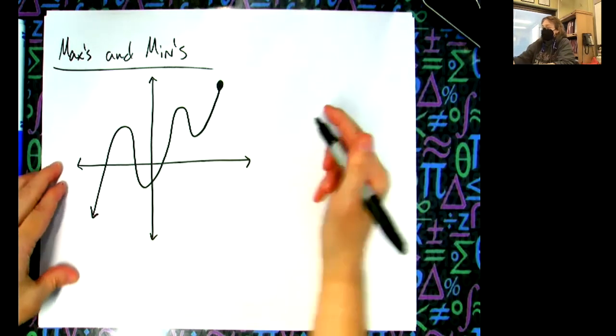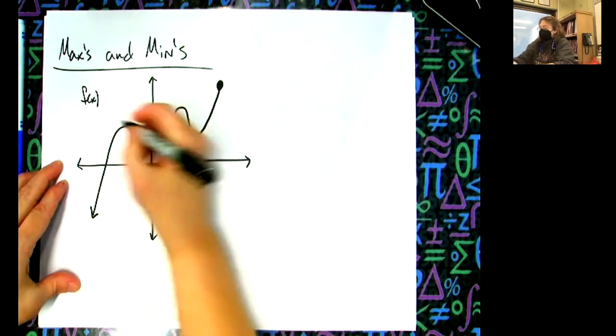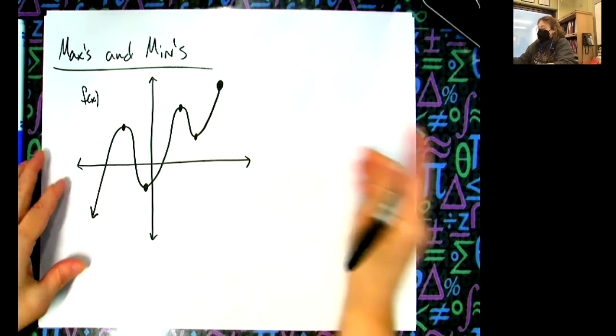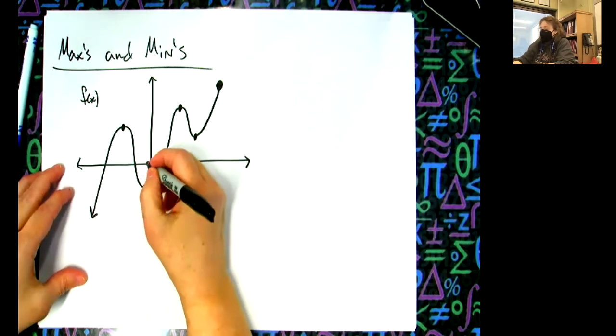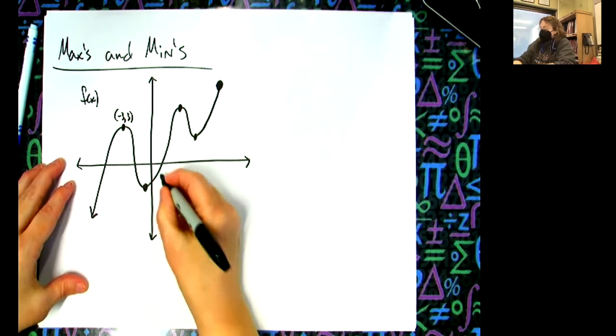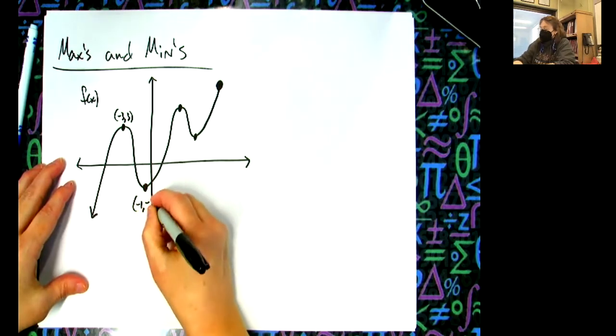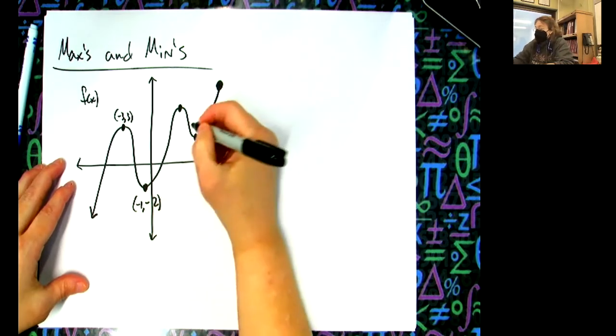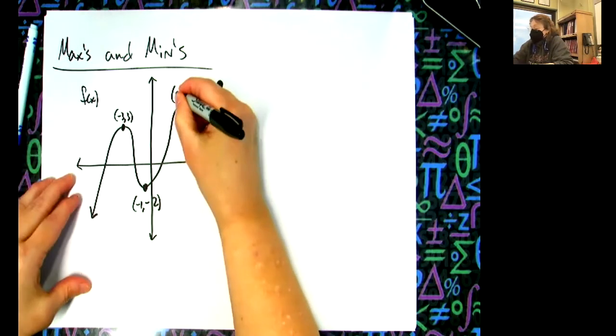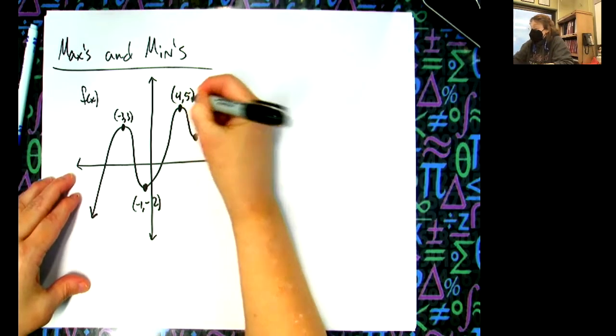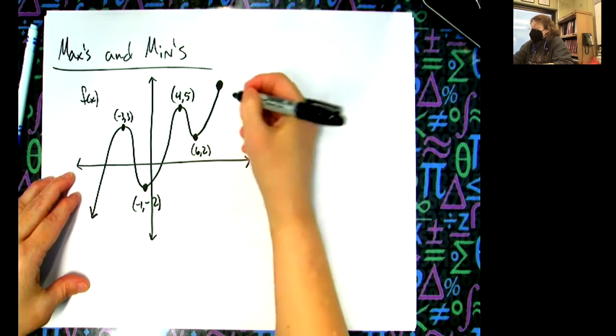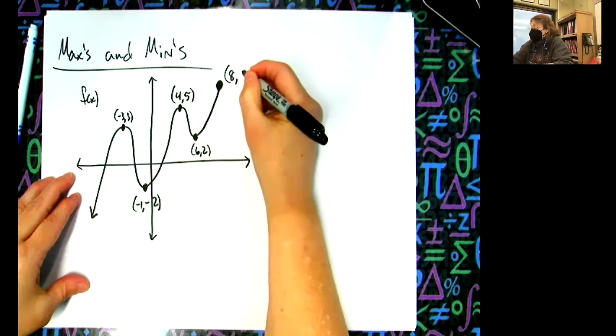Random polynomial function, we're going to call this f of x. I want to clearly define all these points. So, we're going to say this one's like negative 3, 3. We're going to say this one is negative 1, negative 2. We're going to say this one is 4, 5. We're going to say this one is 6, 2. And we're going to say this one is 8, 7.